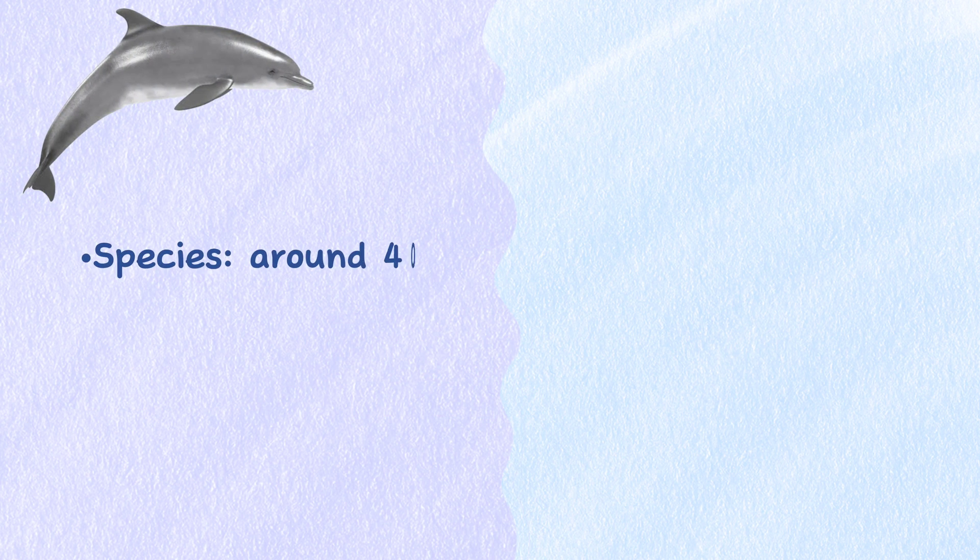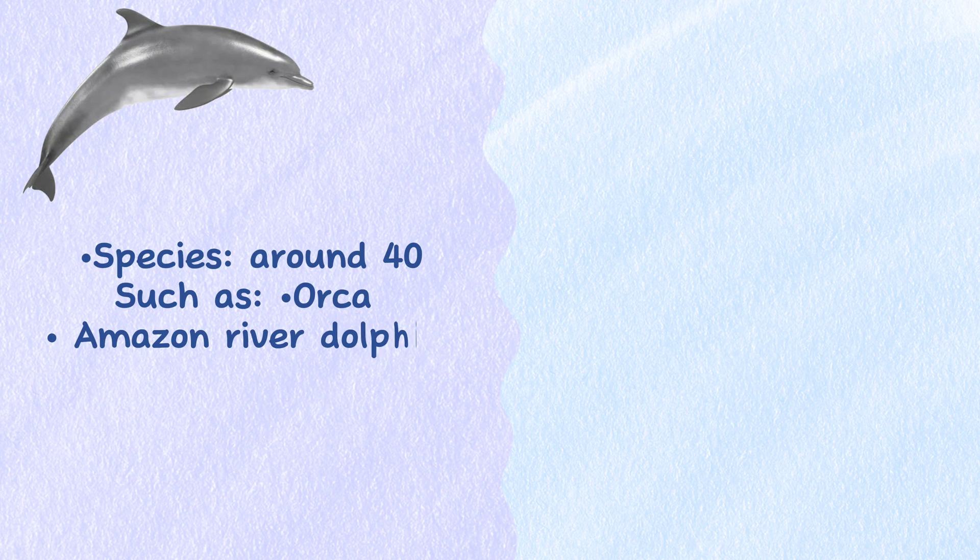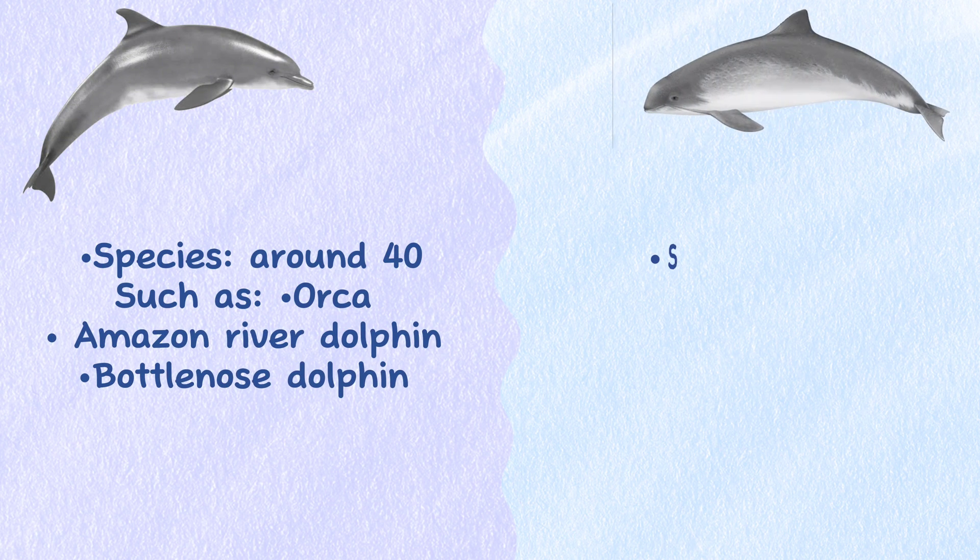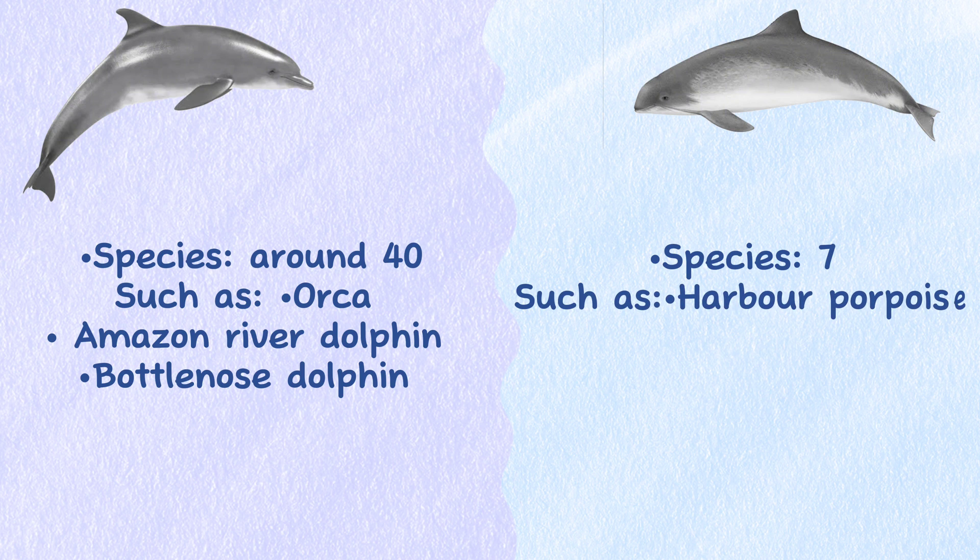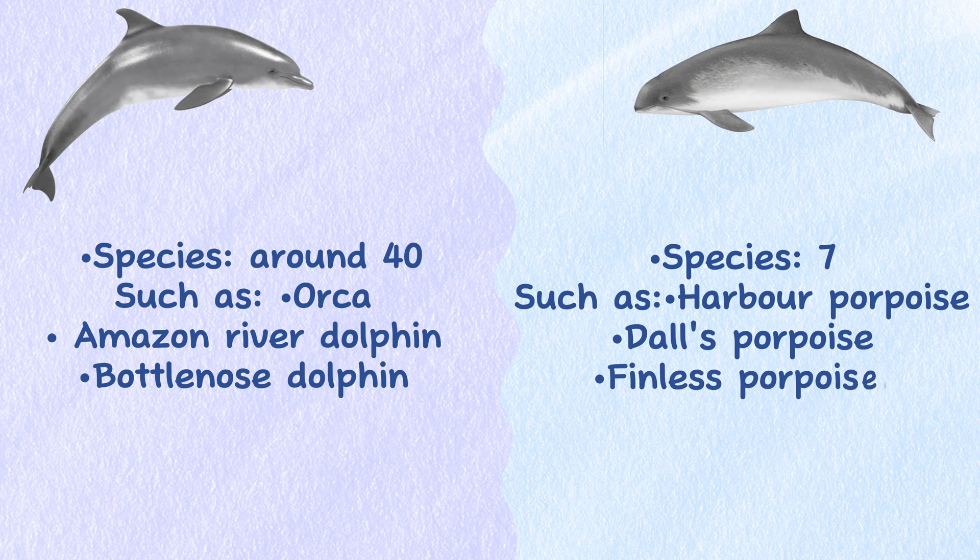Species. There are around 40 species of dolphins like orca, Amazon river dolphin, and bottlenose dolphin. While there are only 7 known species of porpoises like harbor porpoise, Dall's porpoise, and finless porpoise.